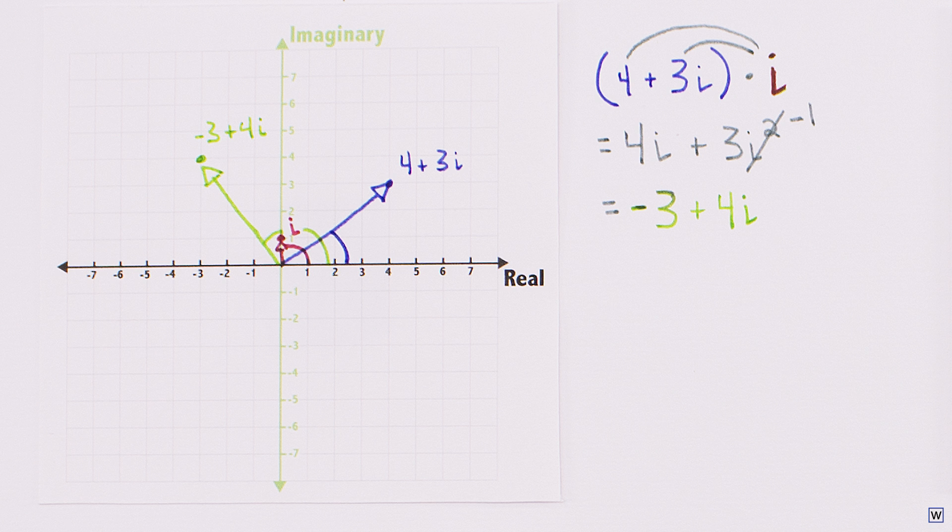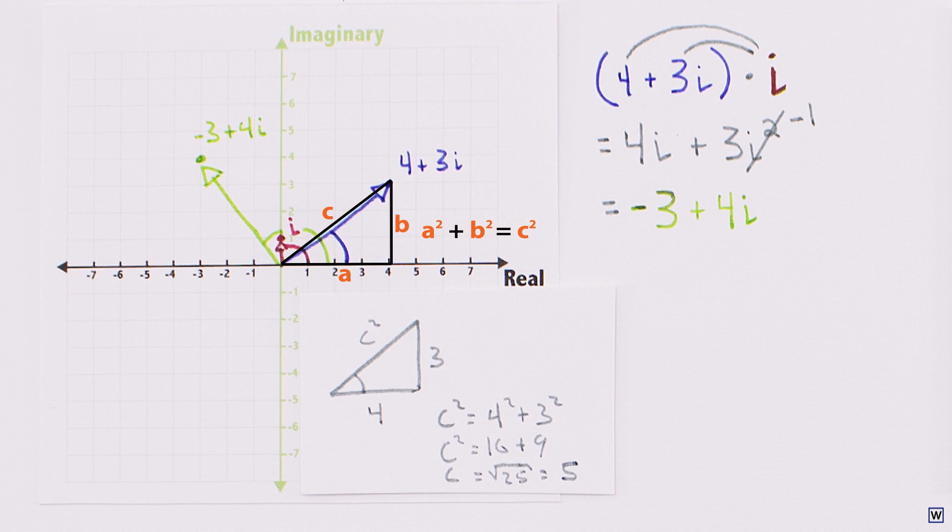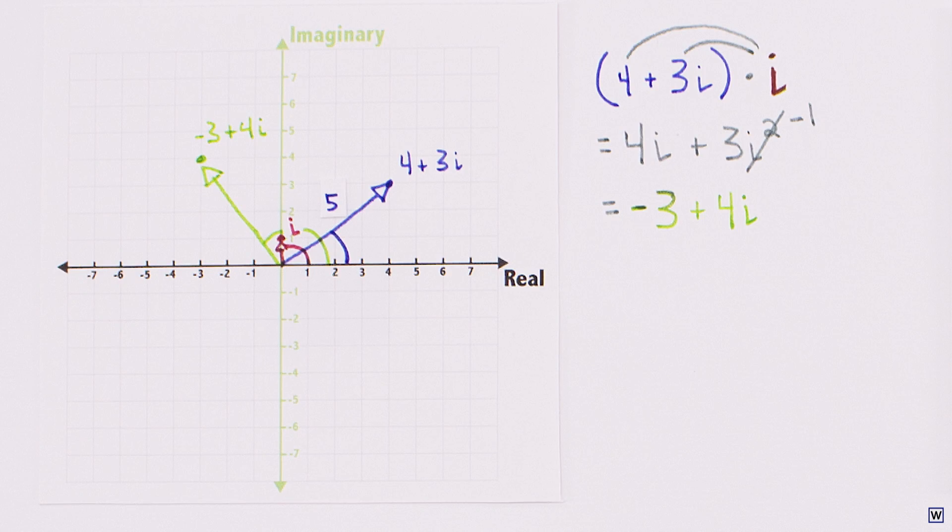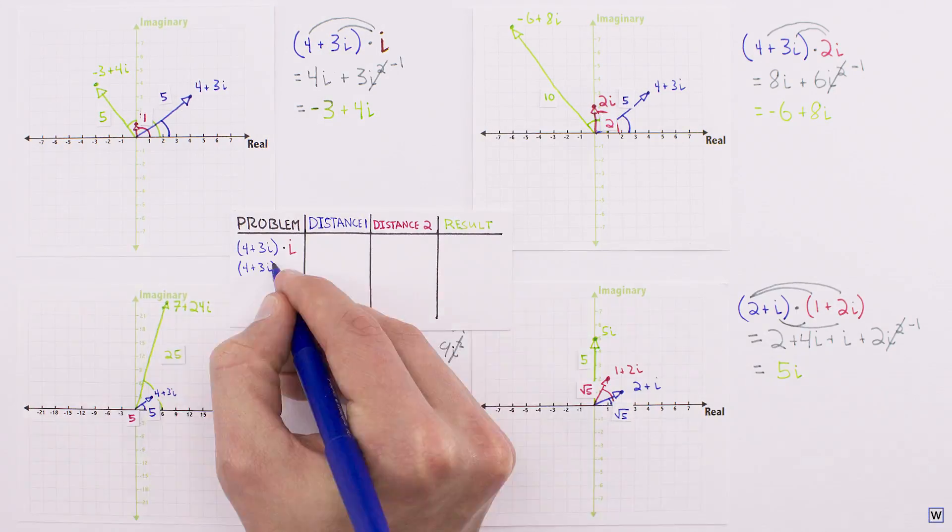We can measure the distance between the origin and our complex numbers by forming right triangles and using the Pythagorean theorem. Just as before, let's compute our measurement for each example and look for patterns.